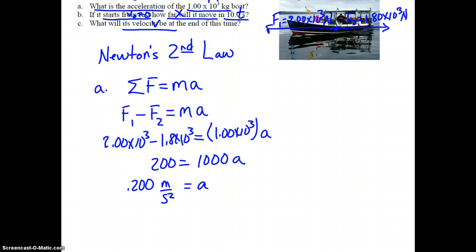Let's go back up and remind ourselves what we're looking at for B. For B, if it starts from rest, how far will it move in 10 seconds? That sounds like an X equals V0T plus 1 half AT squared calculation. Substitute X equals 0, since it starts from rest, plus 1 half, 0.200, times 10 squared. 10 squared is 100. Half of 100 is 50. We need 2 tenths of 50. Well, 1 tenth of 50 would be 5, so 2 tenths of 50 would be 10. 10.0 meters.